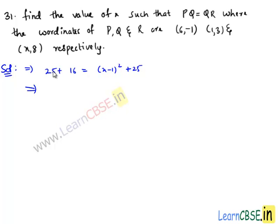This implies, cancelling 25 on both sides, we get 16 equals (x-1)².